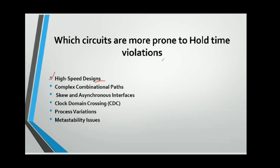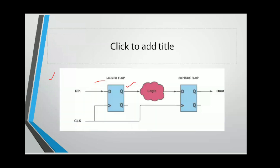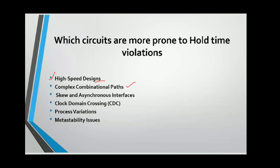Now let us see which circuits are more prone to hold time violations. High-speed designs — where the clock frequency is high — have a very short clock period, giving very little time for the data to stabilize, increasing the chances of hold time violation. Another type is complex combinational circuits with long paths and large delays, where a lot of mathematical or logical operations are involved, making it difficult for data to arrive and remain stable after the clock edge.